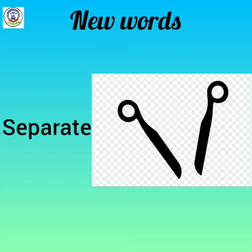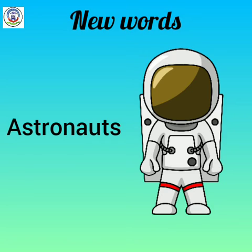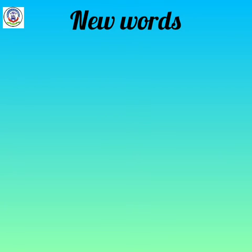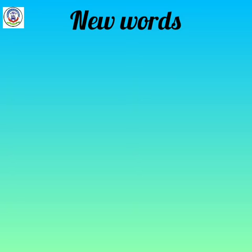Next: separate — s-e-p-a-r-a-t-e. Separate means apart, not together. Separate ka matlab hota hai alag ya na juda hua. Next: astronauts — a-s-t-r-o-n-a-u-t-s. Astronaut means a person who travels in a spacecraft. Astronauts ka matlab hota hai antriksh yatri. Next: carry — c-a-r-r-y. Carry means to have something with you as you go somewhere. Carry ka matlab hota hai saath le jaana.